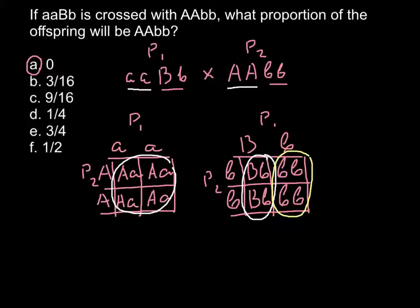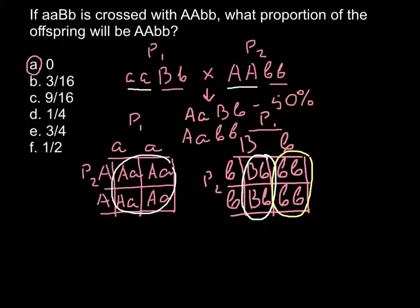That means there are two possible genotypes for the progeny or F1 generation. That would be AaBb that we take from this table, which is going to be 50%. Another variant would be Aabb, which is going to be another 50%.